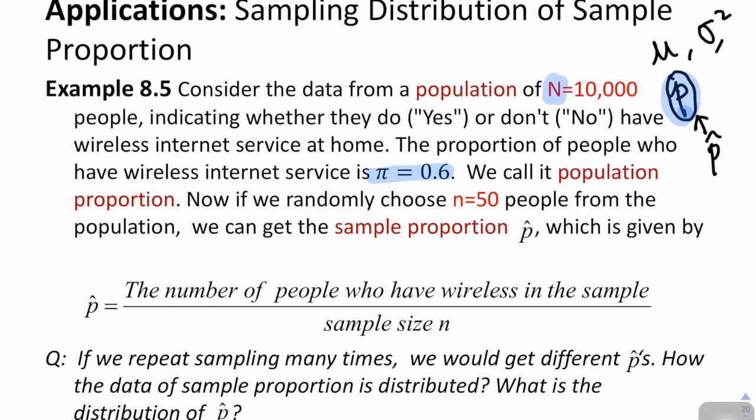Now, if we randomly choose n equals 50, so 50 people were chosen from the population, we can get the sample proportion p hat, which is given by p hat equals the number of people who have this service in the sample divided by the sample size n. So now we have the population proportion and we have the sample proportion.